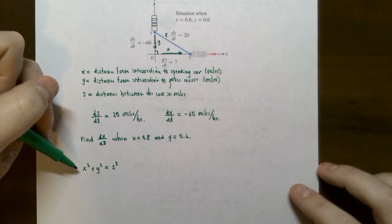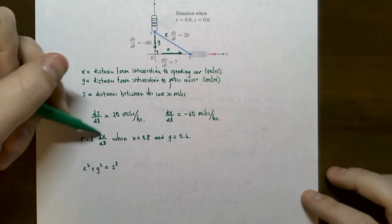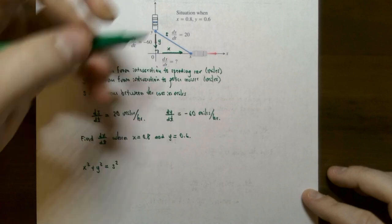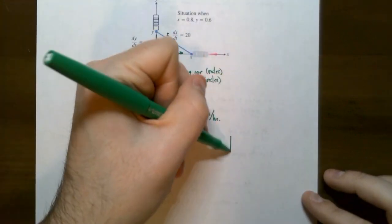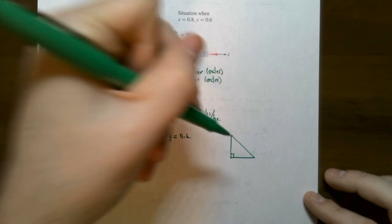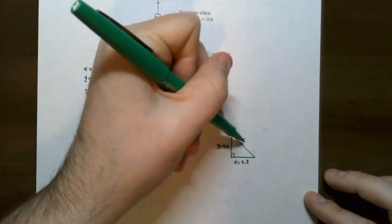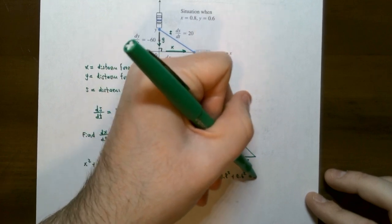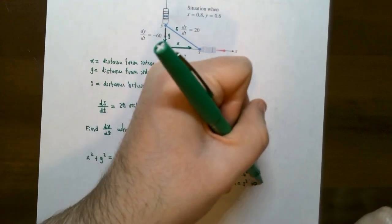Before taking the derivative, we find s: 0.8² + 0.6² = s², giving 1 = s², so s = 1 mile. Now we have all the information needed.